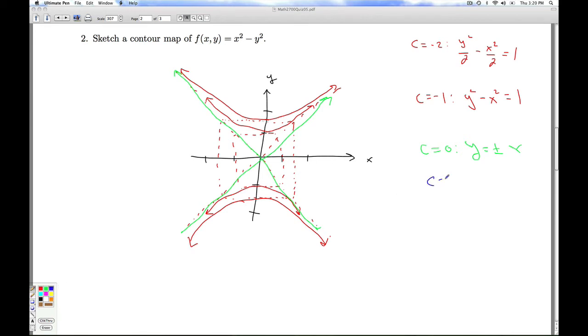And then for the positive value with c, it's going to be x squared minus y squared equals 1. So I'm going to start out and open to the right and to the left now. And then for c equals 2, x squared over 2 minus y squared over 2 equals 1. And you get that.